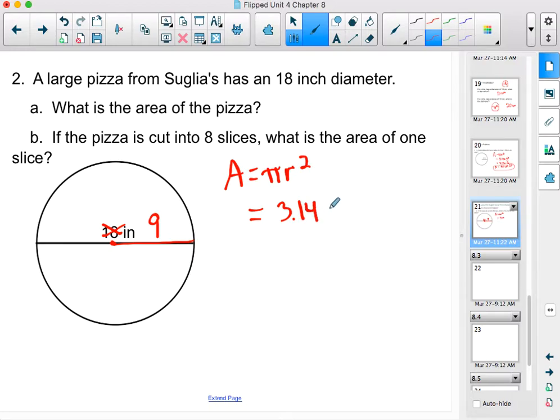So substitute 3.14 in for pi, substitute 9 for r, that is our radius. Follow the order of operations, 9 squared is 81, and I've got to multiply that by 3.14.